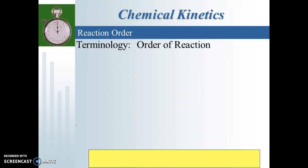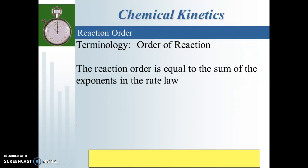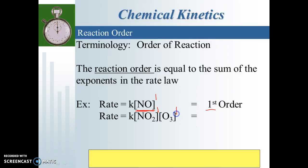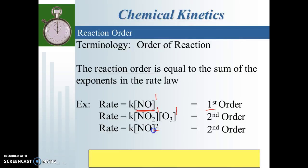A couple of terms when writing rate law expressions: you'll often hear people talk about the order of the reaction — don't let that confuse you. The order is simply the sum of all your exponents. In the NO2/ozone example with no exponent written, it's a 1, so that is a first order reaction. In the reaction where both species have exponent 1, one plus one equals two — that is a second order reaction. A reaction where something is squared is also a classic second order reaction.